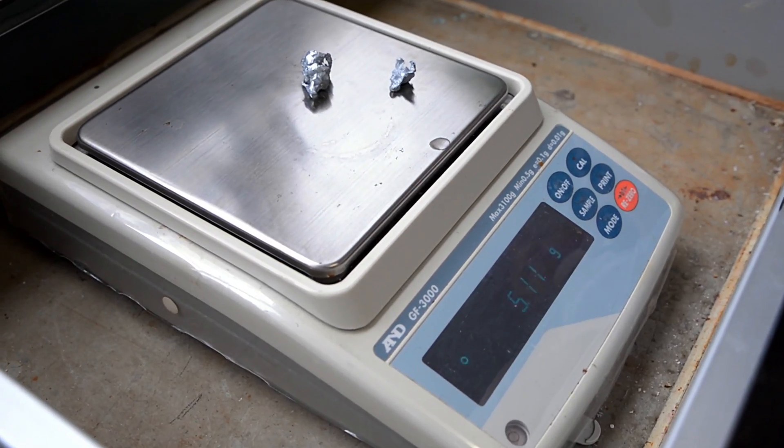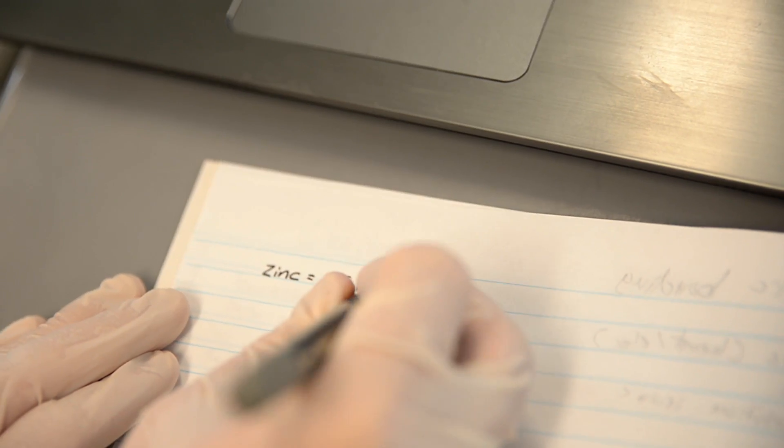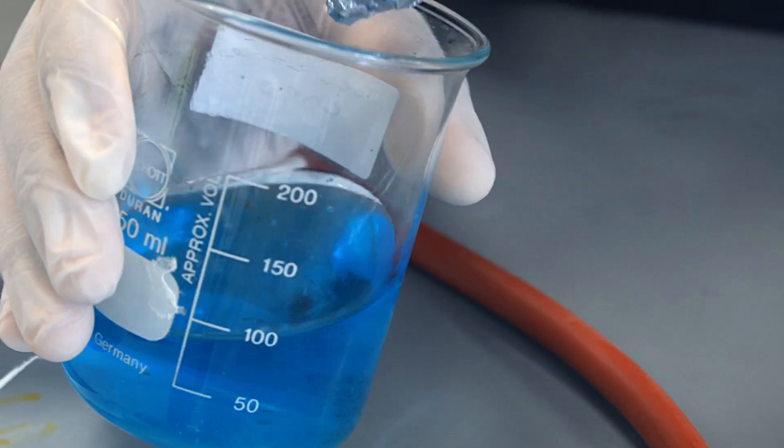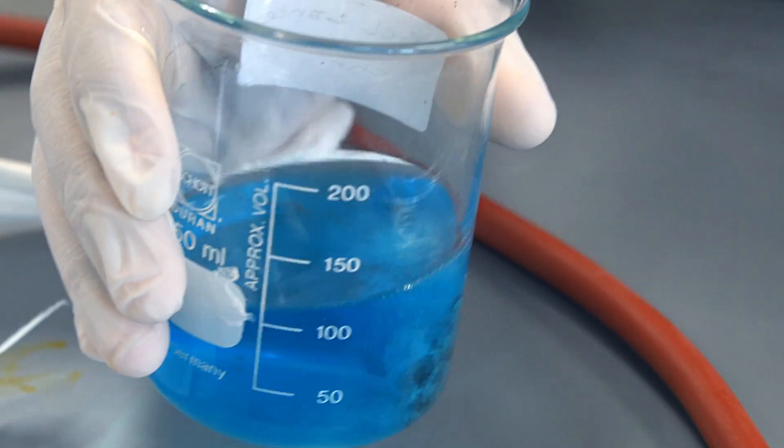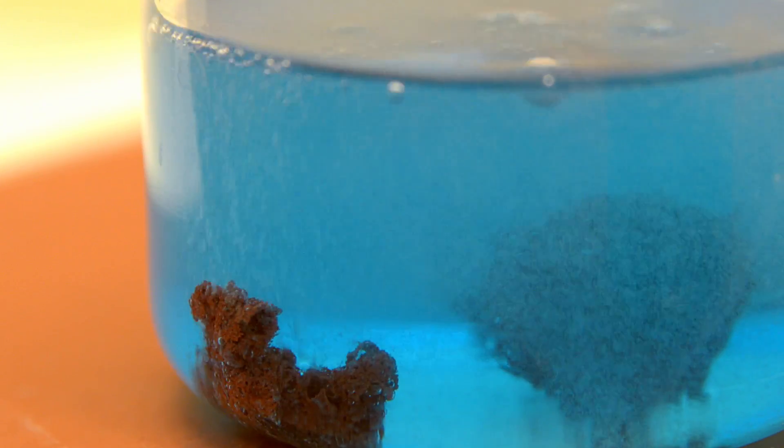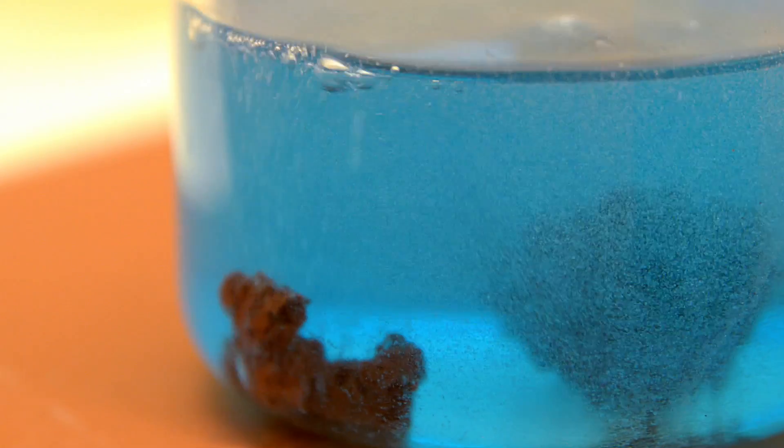We then measured out roughly 5 grams of zinc and added this to our solution. This produced a gas, so we put it into the fume hood with a watch glass on top. This reaction took a long time, so we left it in the fume hood overnight.